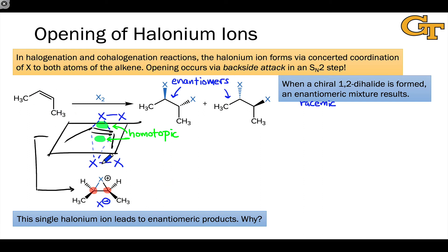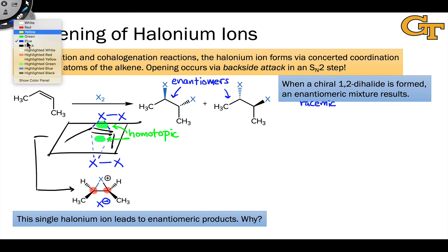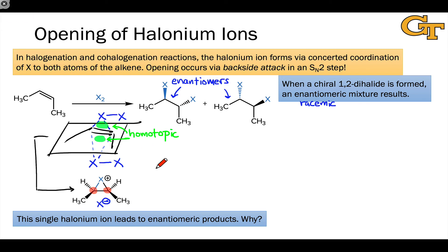So we lack rotational symmetry, but we have reflection symmetry that exchanges those carbons. The two carbons are enantiotopic, and this means that addition of an atom to one or the other of the carbons is going to lead to a pair of enantiomers.